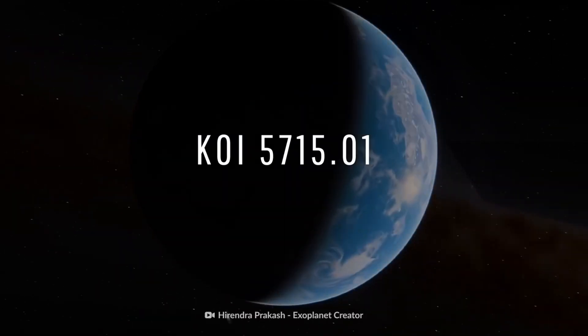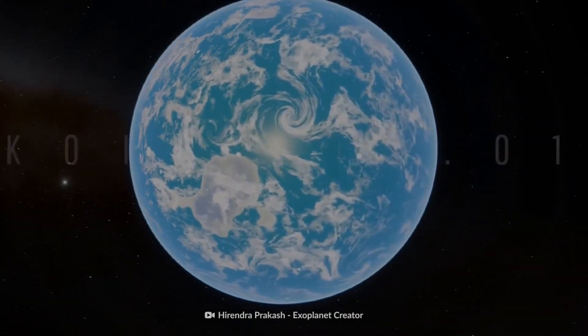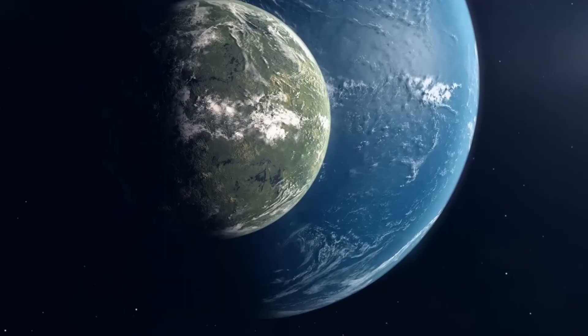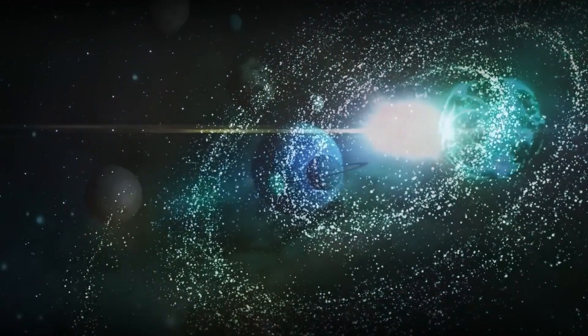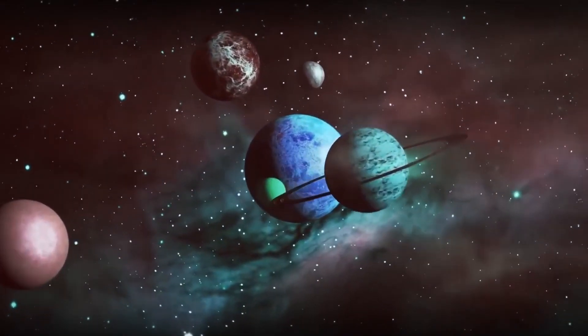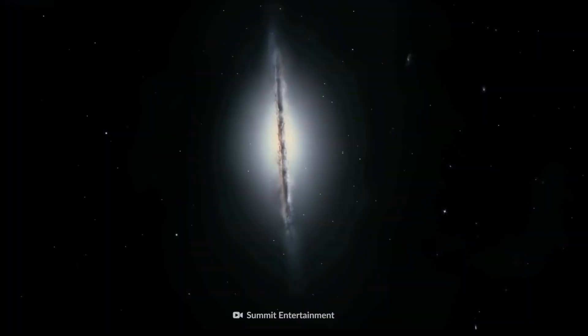KY 5715.01 stands out as an exceptional contender in the quest for superhabitable planets, despite the daunting distances separating us from these tantalizing worlds. Most of these extraordinary candidates, including the frontrunner located a staggering 3,000 light-years away from our solar system, remain far beyond our reach for exploration or direct study.